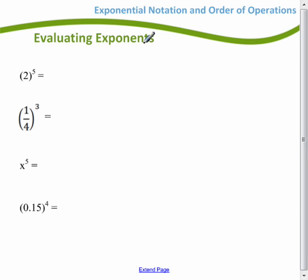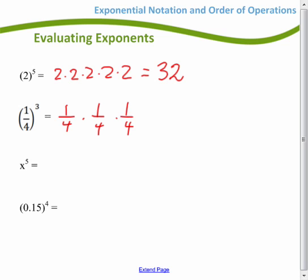Now, if I want to evaluate them, if they say what is 2 to the fifth, I could rewrite that as 2 times 2 times 2 times 2. And if I multiply all those together, I do come out to an answer of 32, just a normal integer. I could do the same thing with fractions. A quarter to the third means that I have three quarters. And if I multiply all those together, I get 1 over 64.